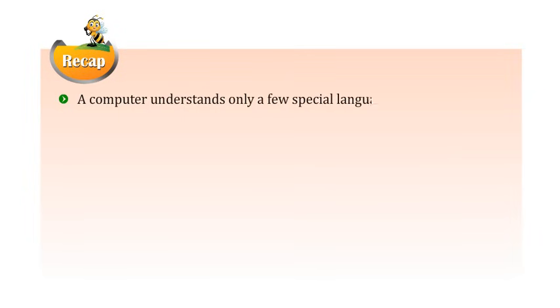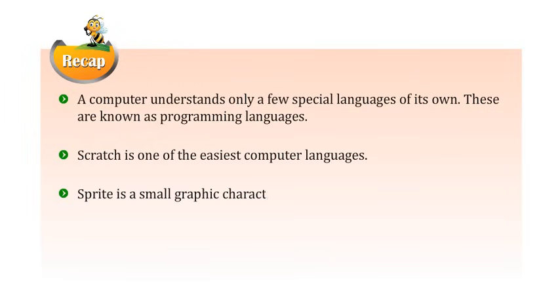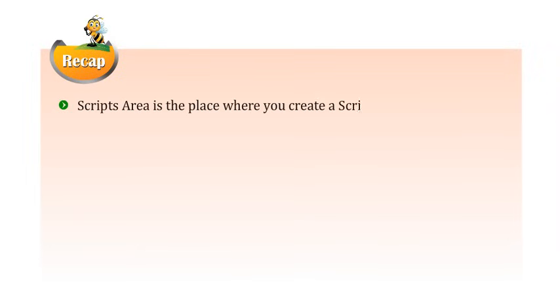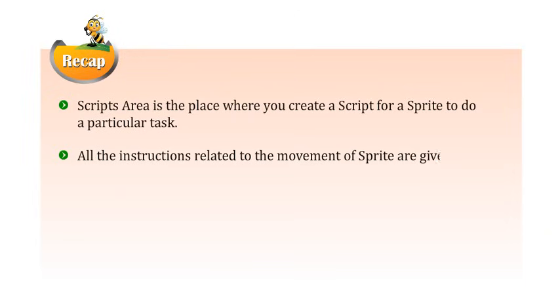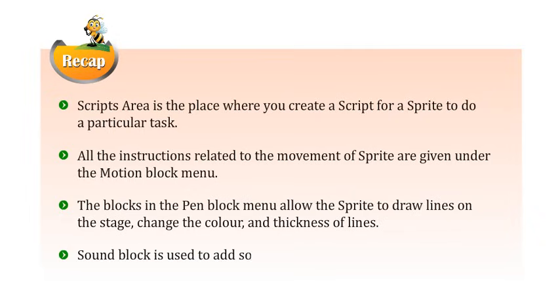Let us take a recap of this chapter. A computer understands only a few special languages, known as programming languages. Scratch is one of the easiest computer languages. Sprite is a small graphic character that performs actions in a Scratch project. Script is a collection of step-wise instructions given to a sprite. Scripts Area is where you create a script. The Motion Block menu handles sprite movement, the Pen Block menu allows drawing lines and changing color and thickness, and the Sound Block is used to add sound to the project.